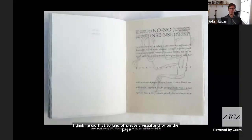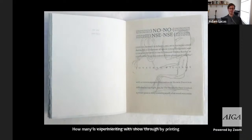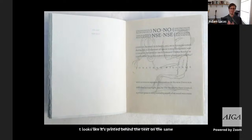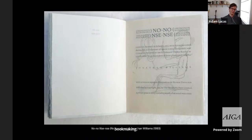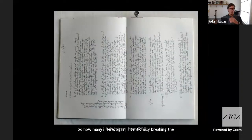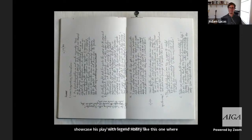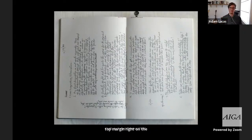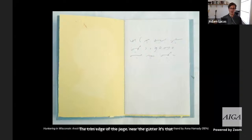Hamady also experimented with show-through by printing on Sekishu, a very thin Japanese paper. The illustration that looks like it's printed behind the text on the same side is actually printed on the reverse side of the page — something avoided, if not frowned upon, in traditional fine letterpress printing. There are also title and half-title pages that showcase his play with legibility: one features a title set like a strange header pinched into the top margin near the trim edge, in little red monospace type; another uses his wife's shorthand writing as the half-title — gorgeous but illegible to most.